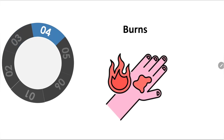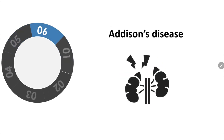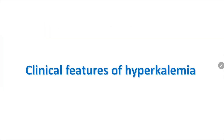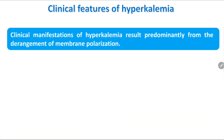Rhabdomyolysis causes hyperkalemia due to destruction of cells and release of potassium. Burns can also lead to increased potassium secretion. Similarly, metabolic acidosis causes a shift, as potassium exchanges with hydrogen ions and moves into the vascular system. Addison's disease is another cause.